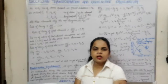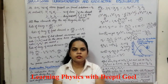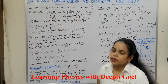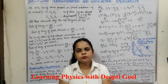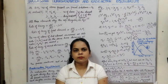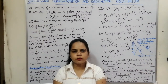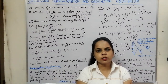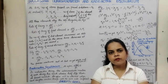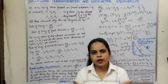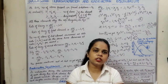Hello students. Today we shall be discussing Radioactive Successive Transformations and Radioactive Equilibrium. In the previous lecture, we had discussed the Radioactive Series. There are 4 types of Radioactive Series: Thorium Series, Neptunium Series, Actinium Series, having mass numbers A equal to 4N, 4N+1, 4N+2, or 4N+3.